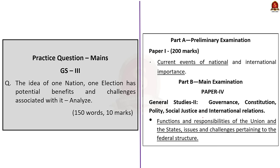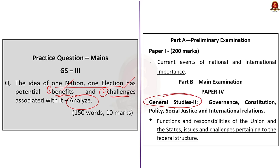The question is: 'The idea of One Nation, One Election has potential benefits and challenges associated with it. Analyze.' The keyword is 'analyze' and there is a definite structure — we have to list the benefits and the challenges. We can divide the body part of the answer into two halves. This question can be asked in GS Paper 2 under the syllabus on functions and responsibilities of union and states.